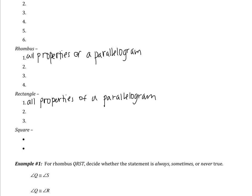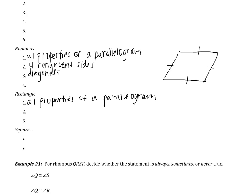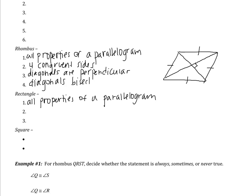A rhombus has three other important properties. Property number two is that a rhombus has four congruent sides. So a rhombus has four congruent sides and all the properties of a parallelogram: opposite sides are parallel, the diagonals bisect each other, opposite angles are congruent, etc. It also has four congruent sides, and the diagonals are perpendicular.